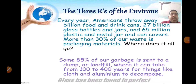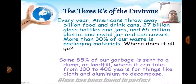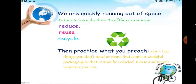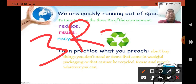The question arises: how to reduce the generation of garbage? Every year, India and America throw away billions of food and drink cans. About 80% of garbage is sent to the dump or landfill, where it can take 100 to 400 years for things like clothes and aluminium to decompose. This can be achieved by practicing the 3 Rs — reduce, reuse and recycle.